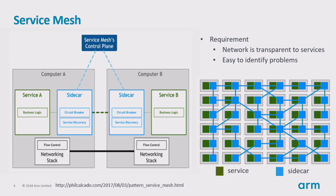Each service has its own proxy, and all proxies are connected to form the mesh. The service is not aware of the proxy — it just sends out traffic, and all communication to or from the service is routed by the proxy. From the architecture, we can see the service mesh is composed of a control plane and a data plane. The control plane provides policies and configurations for each data plane in the mesh, turning all data planes into a distributed system. The data plane handles health checking, load balancing, authentication, and observability. A typical data plane solution is Envoy.